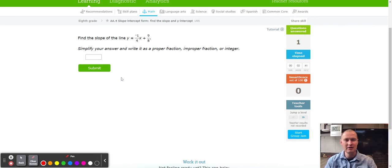Hello, this is Mr. Painter with another fabulous IXL tutorial. Today we're working on A.4 slope-intercept form, and we're going to be looking for two things: slope and y-intercept.